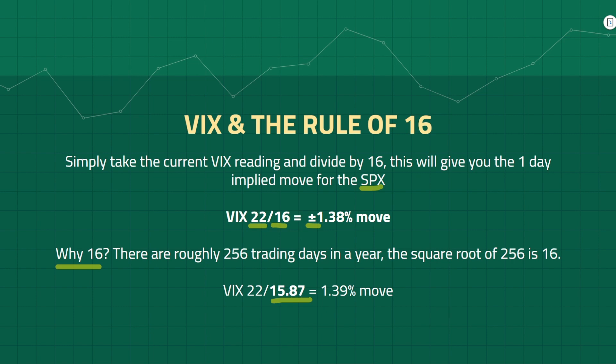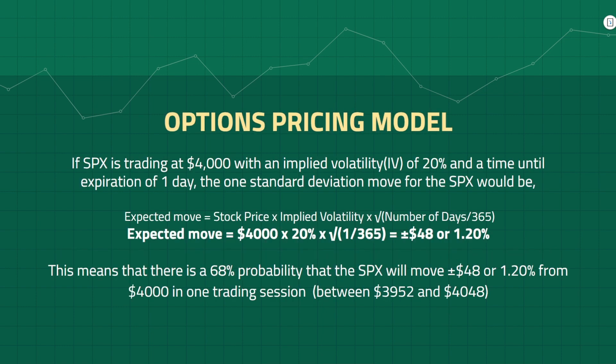The most popular way to calculate the expected move is based on the options pricing model. While there are a number of pricing models, what is widely adopted is Black-Scholes, and that's what you'll find with most brokers. In fact, most brokers will actually calculate the expected move for you, which you can generally find on the options chain. We will highlight the formula here and go over a quick example.